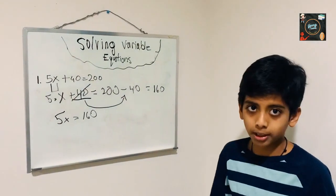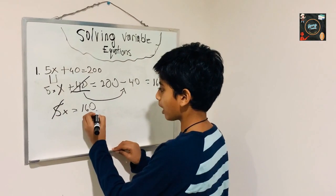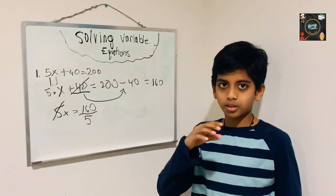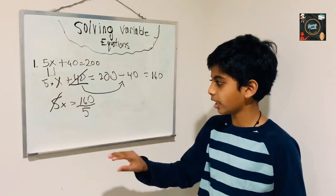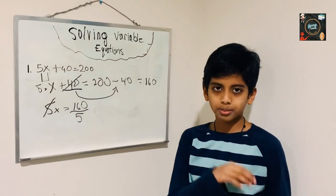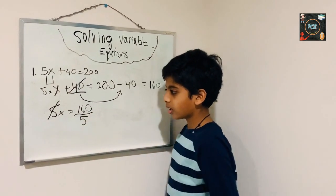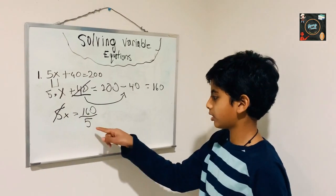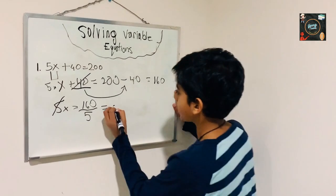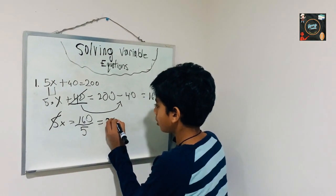Since 5x means 5 times x, we have to take the 5 and divide it over to the other side. Since 5 is on the multiplication side, when we switch it over we have to change it to the division sign, because the opposite of multiplication is division. Now let's divide — and when we divide we get 32.